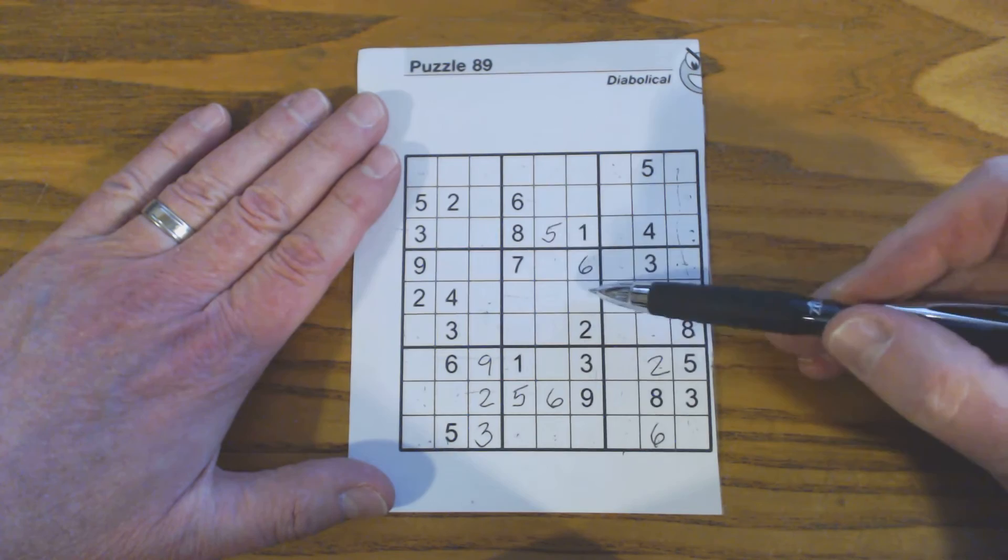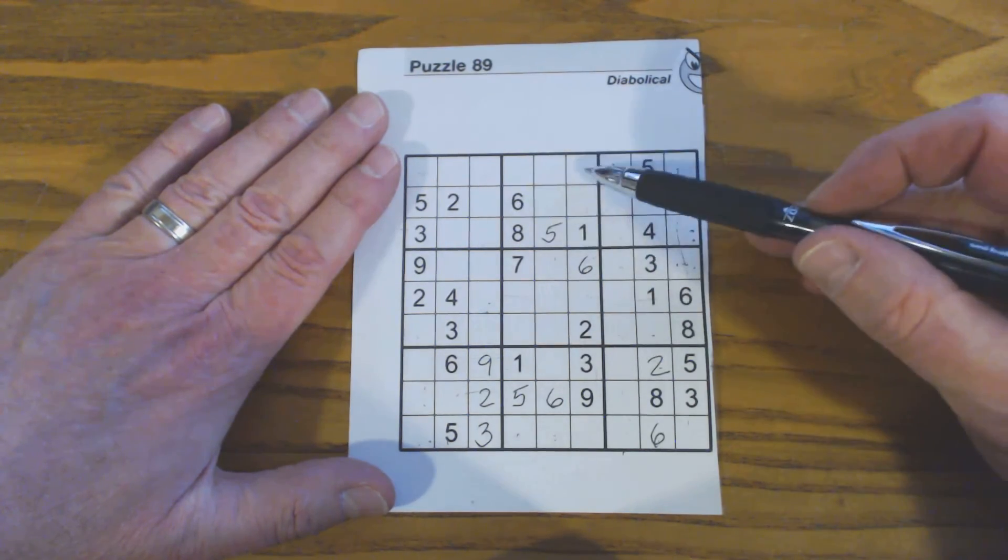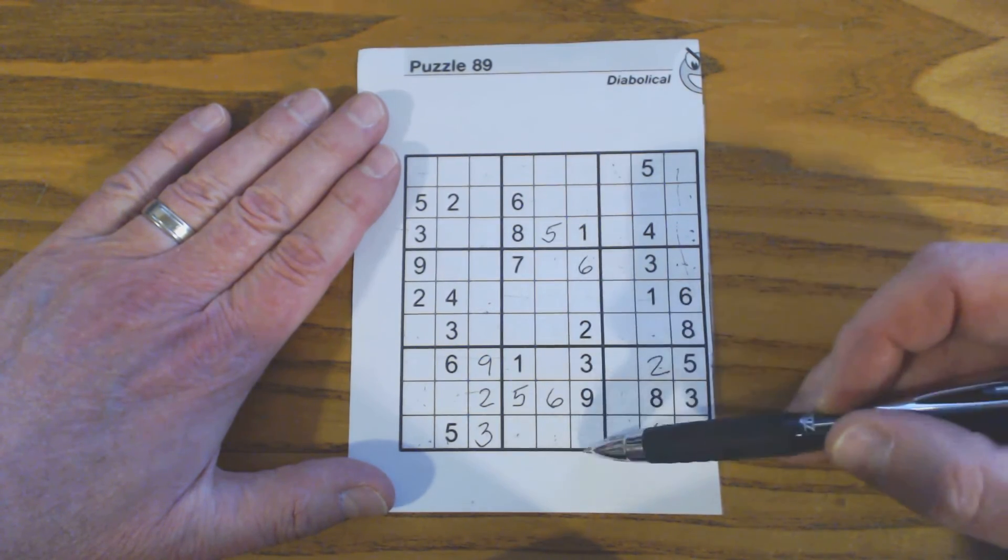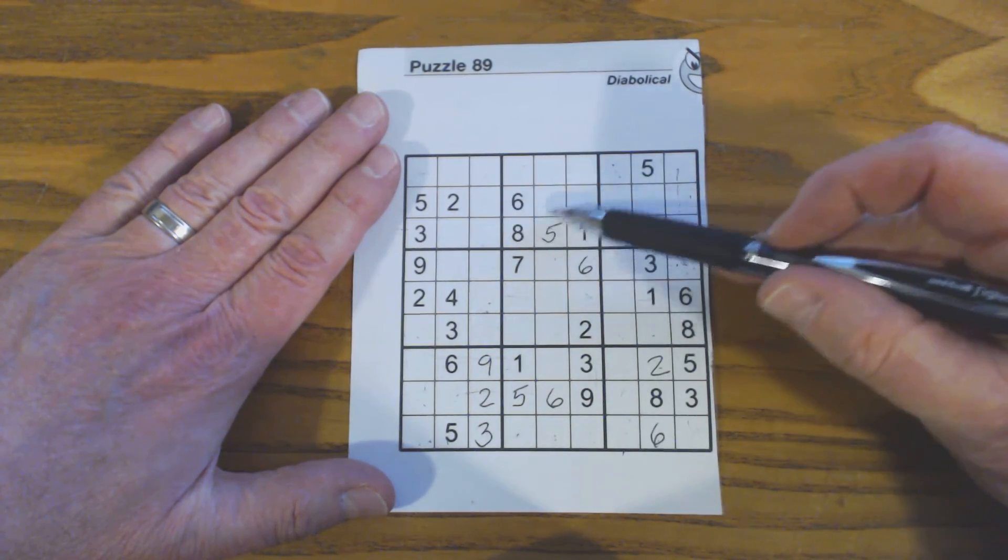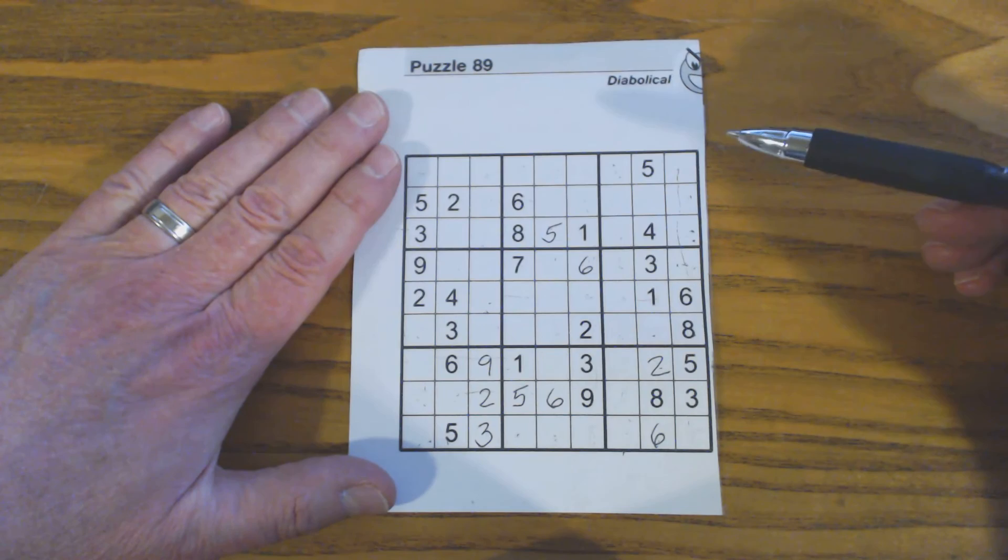So this 8 and 5, you'll notice, even without finding these triplets and these twins here, that the 8 and the 5 will go there. And so you could even fill those in without finding twins and triplets up here. But either way is a good way to solve some numbers, find some numbers.